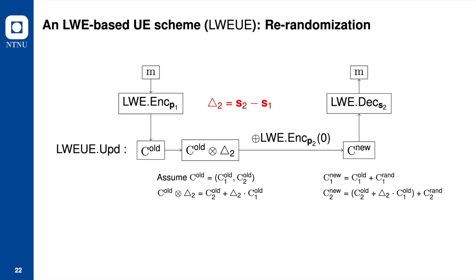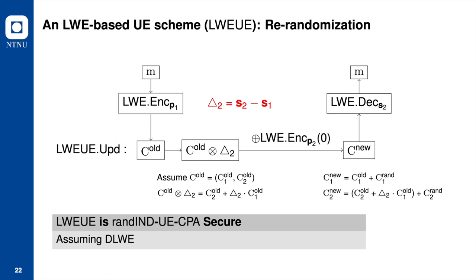Notice that errors in updated ciphertext increase when they are updated. Since the total number of epochs will be a comparatively small interval in practice, errors in updated ciphertext will not grow too large, and decryption will be correct with overwhelming probability. We also have the result that LWE-UE is IND-UE CPA secure. The security proof includes many technical details; please refer to our paper.